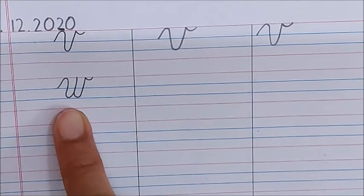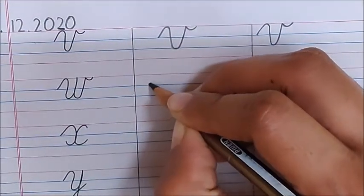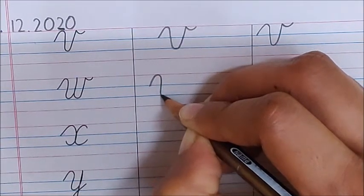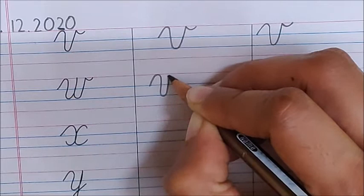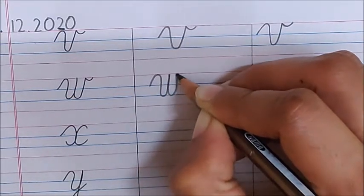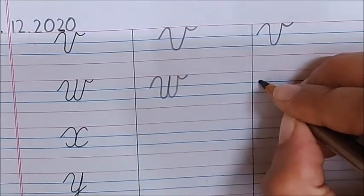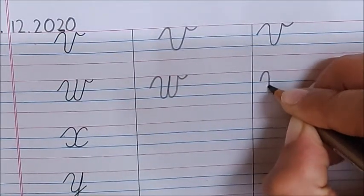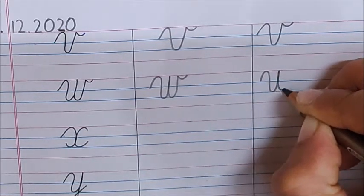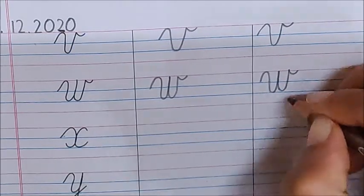Next letter is letter W. Go up, again you have to turn, go down, now go up, touch the red line, come back on the same line, again go up, and a small smiley. Go up, turn, go up, touch the red line, come back, again go up, and a small smiley. W.